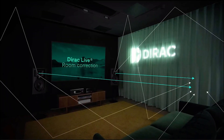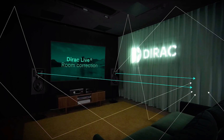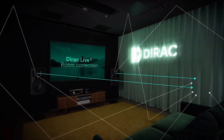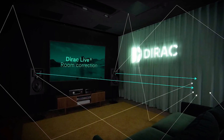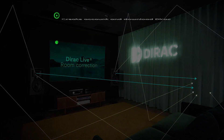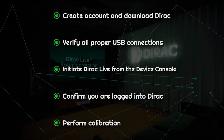This is a brief outline of the Dirac Live process. You can find the full user manual in the resources section of our website. First, create a Dirac Live account and download Dirac. Second, verify you have all the proper USB connections in place, with adequate room to see your computer and be able to fully move the microphone around the measuring area. Next, initiate Dirac Live from the Mini DSP Device Console and confirm that you are logged in to your Dirac Live account.